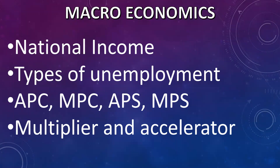Next topic is macroeconomics. The most important concept is national income — different definitions like GDP, GNP, disposable income, taxes — just have a look at all the definitions. Then types of unemployment: structural, classical — look at the definitions. Then consumption and saving: average propensity to consume, marginal propensity to consume, average propensity to save, marginal propensity to save — the formulas and the relationships. Then multiplier and accelerator — formulas and the relationship between marginal propensity to consume and multiplier.